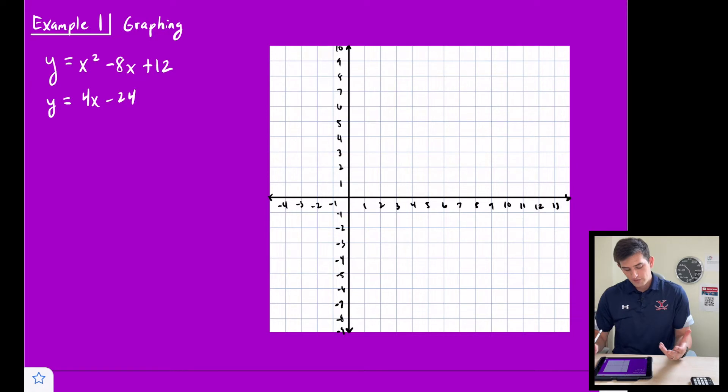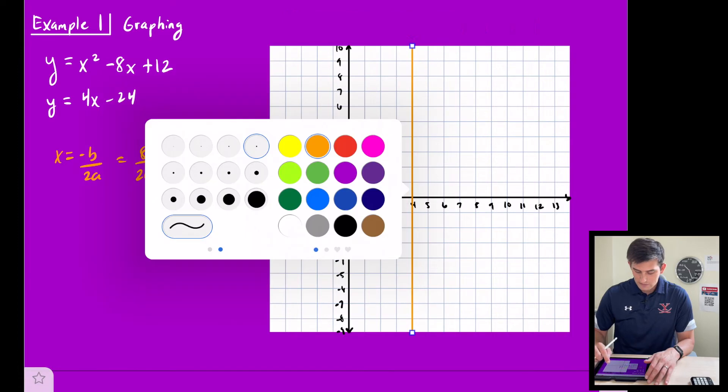And so let's graph our first equation, which is our quadratic, and let's start off by finding the axis of symmetry. So we know that is -b/(2a), so that's going to be 8 divided by 2 times 1, which is 4. So we could put our axis of symmetry through x = 4 right there, and I'll make that a dashed line.